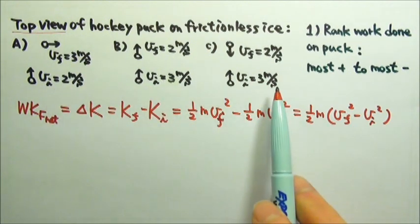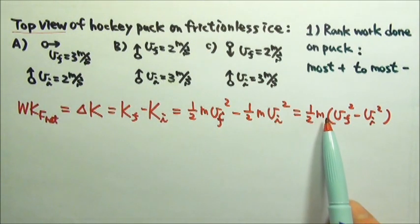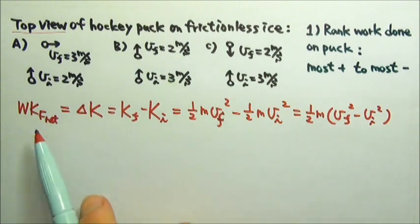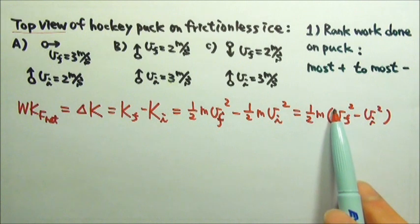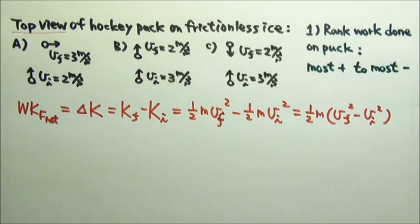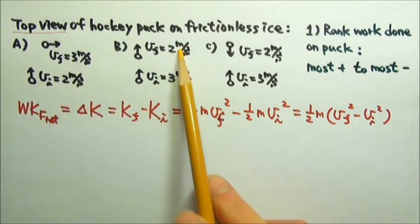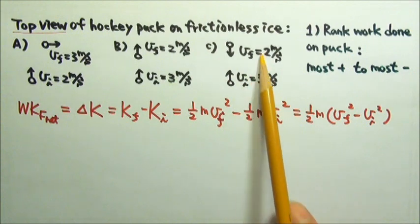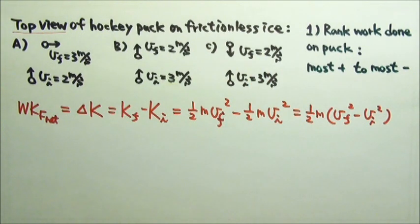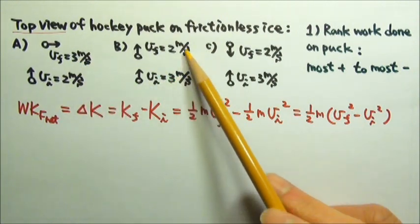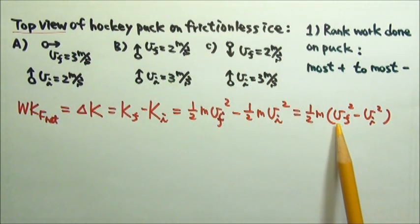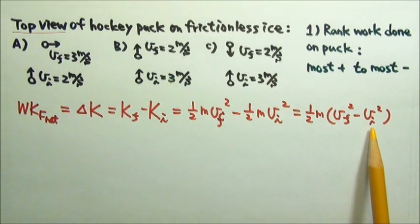Because we're talking about the same hockey puck, the mass is the same. That means to compare the work done by the net force, we just have to compare this part. Another thing is that kinetic energy is a scalar, which means the direction does not matter. We just have to look at the speeds. In this particular case, the speed is either going from 2 to 3 or 3 to 2, which means we don't really have to plug in the numbers here.